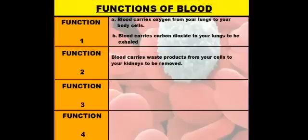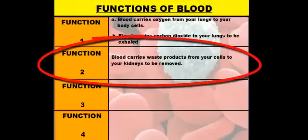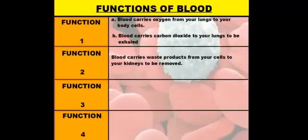Function two: blood also carries other waste products from your cells to your kidneys to be removed. Your blood actually gets filtered inside of your kidneys, taking out excess salts, excess water, and urea waste — and that's how we produce urine. So urine is actually the waste product cleaned out of your blood.